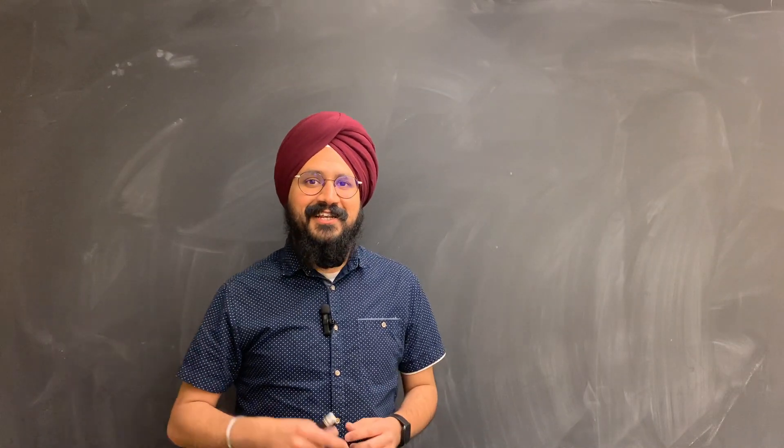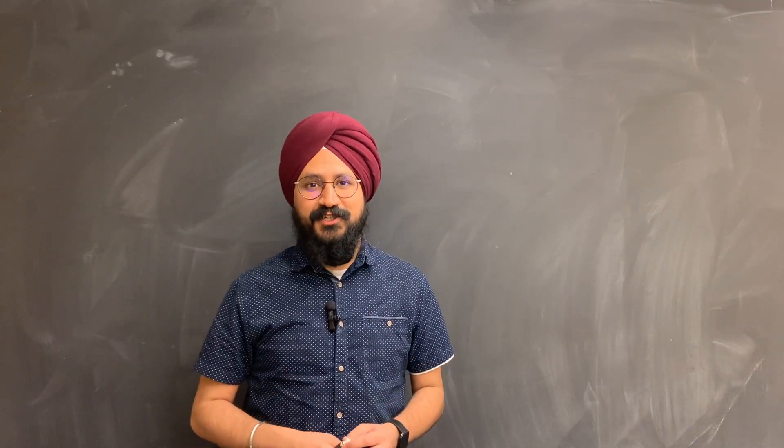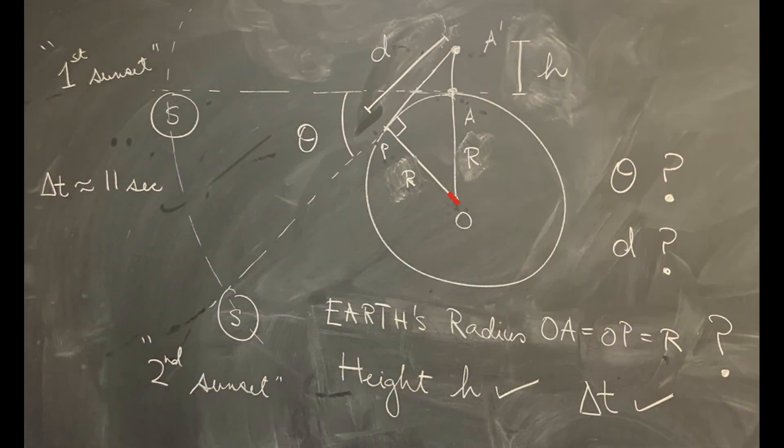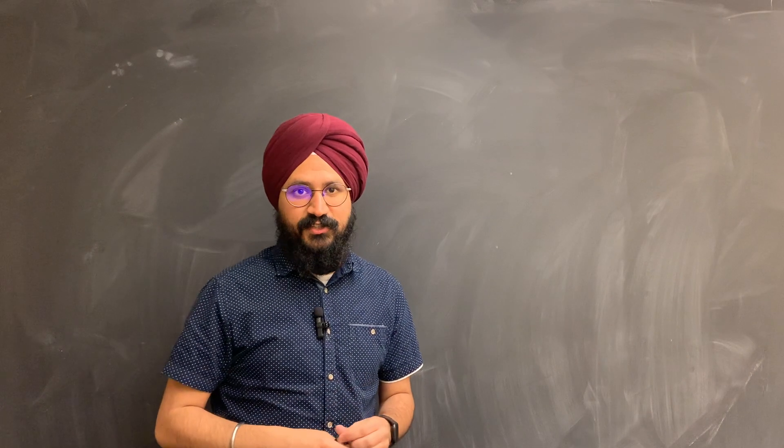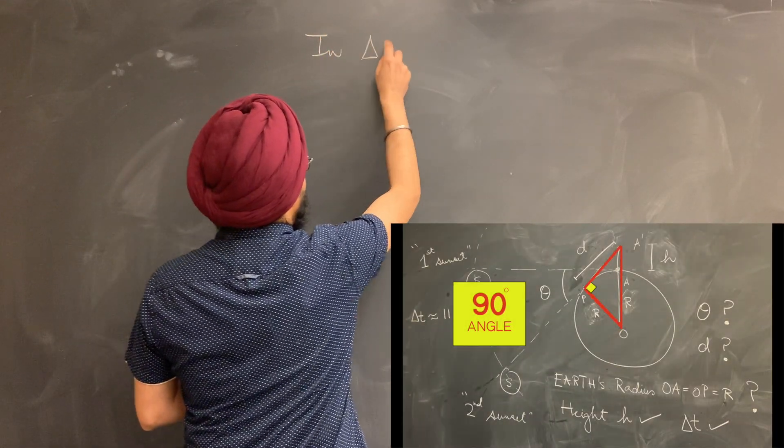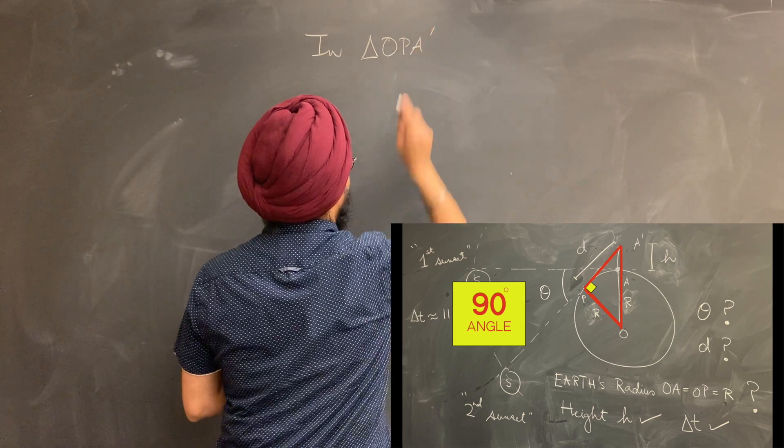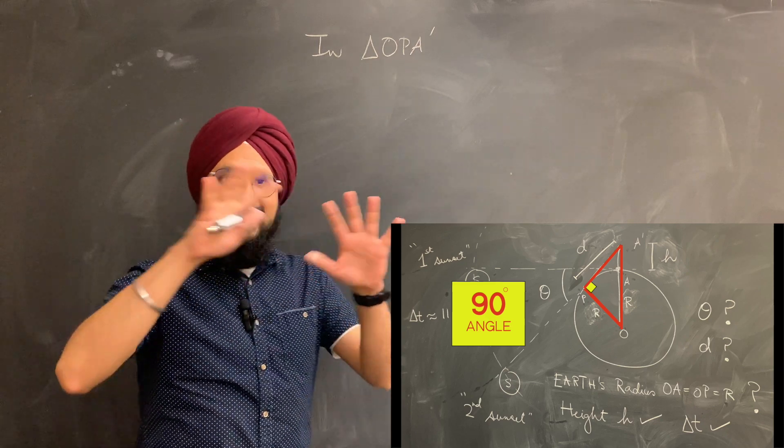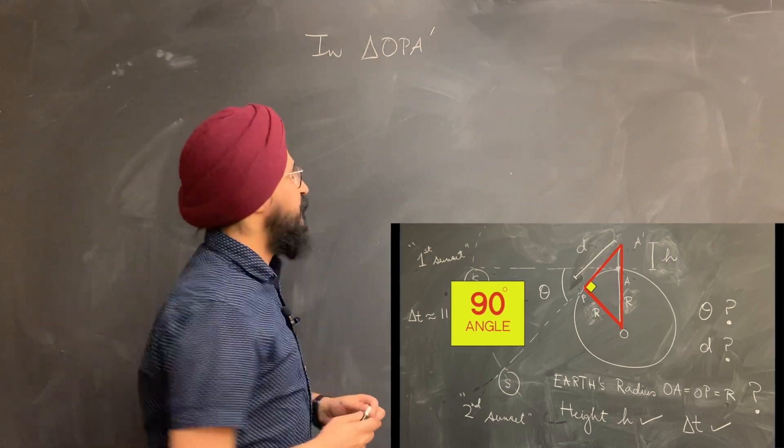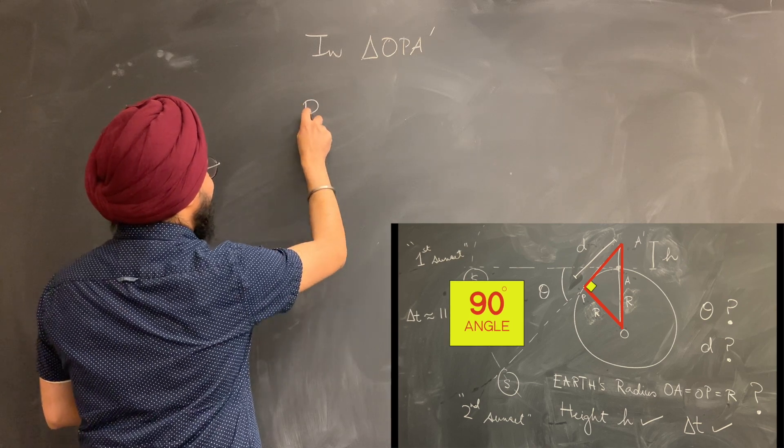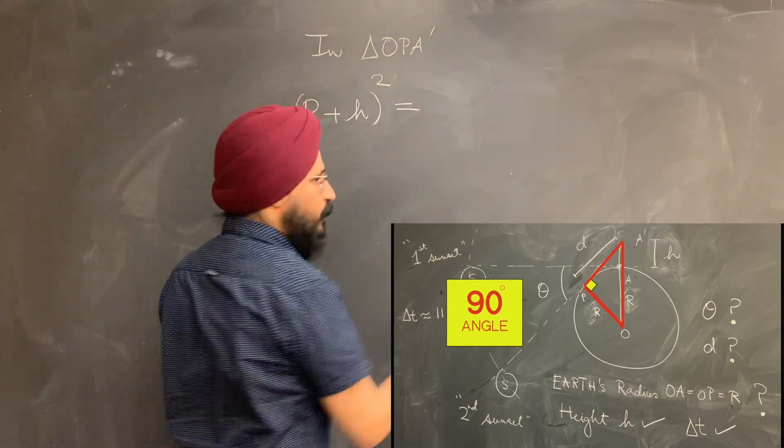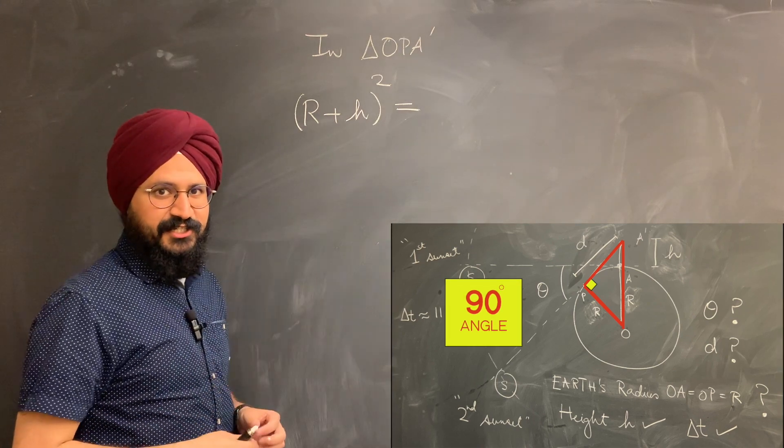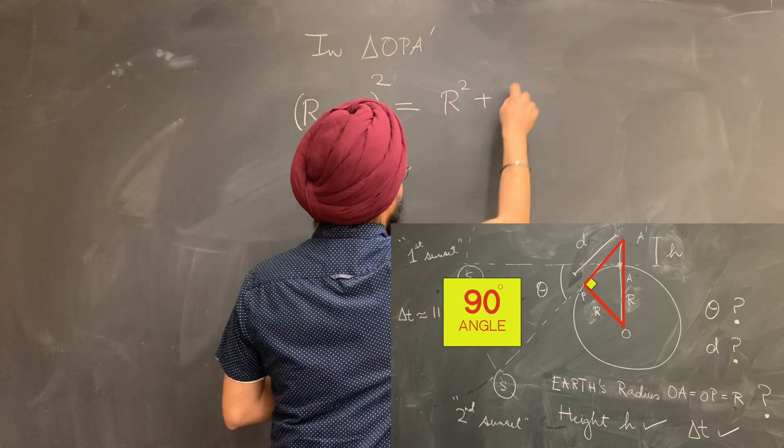Okay, now that we have everything we need, let's scribble a few equations and find the radius of the earth. As you would notice, the triangle OPA' is a right-angle triangle because my line of sight is tangential to the earth's surface and therefore makes a right-angle triangle with the radius of the earth. So in that triangle, in triangle OPA', I can use Pythagoras' theorem to basically connect the lengths of the three sides of the triangle. The longest side has a length of R plus H.